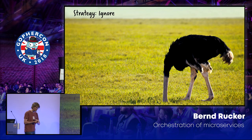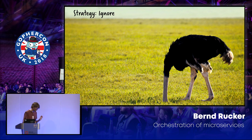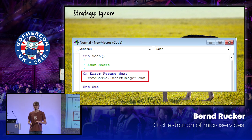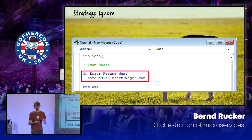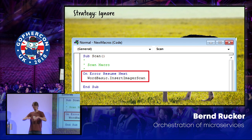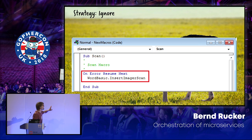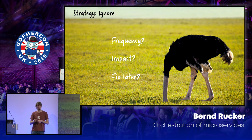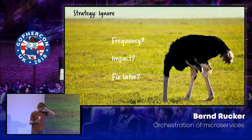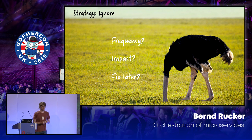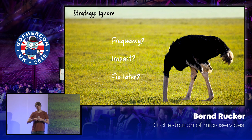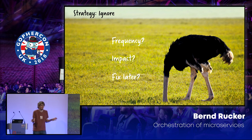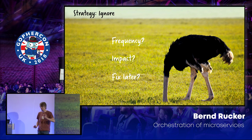The first strategy is: I ignore that problem. Ignoring can be a good strategy if you're using it wisely. I had a customer recently who said, 'We have that one call which writes statistics, and one or two calls a month don't go through, but we have an easy reconciliation job running once a quarter, which is OK for us.' That's a good strategy — perfectly fine. You just have to think about it. So ignorance can be a strategy.